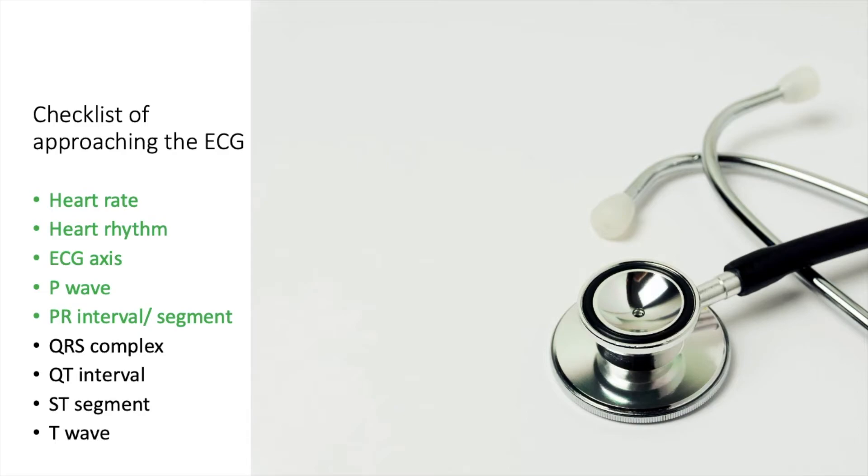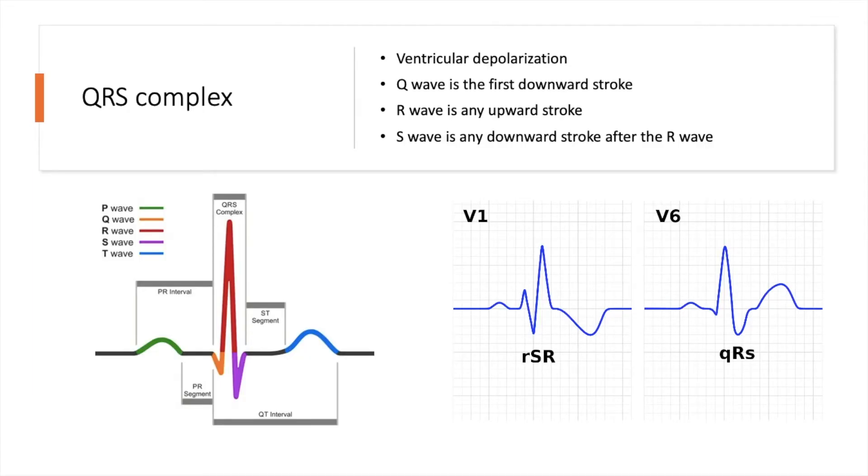So next, we're going to look at the QRS complex, which as we know is ventricular depolarization. It consists of three different parts. The Q wave is the first downward stroke. The R wave is any upward stroke. And the S wave is the downward stroke after the R wave. You might think this is quite obvious when you're looking at a normal QRS complex, but there will be situations where the QRS complex is abnormal. And you can see this example here.